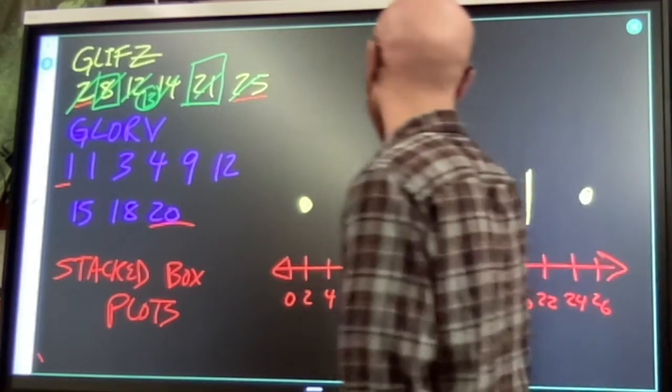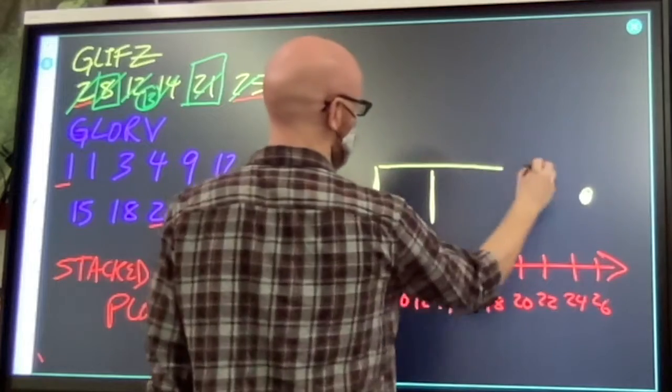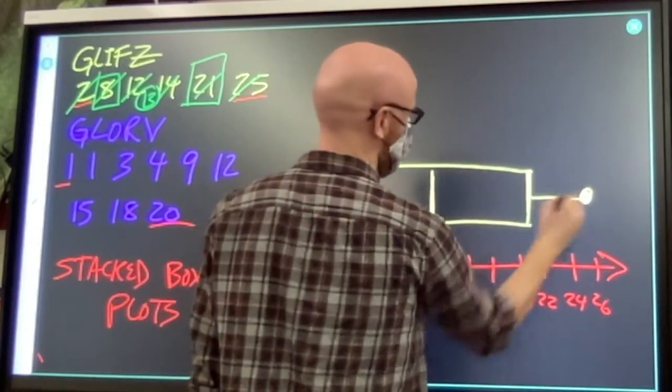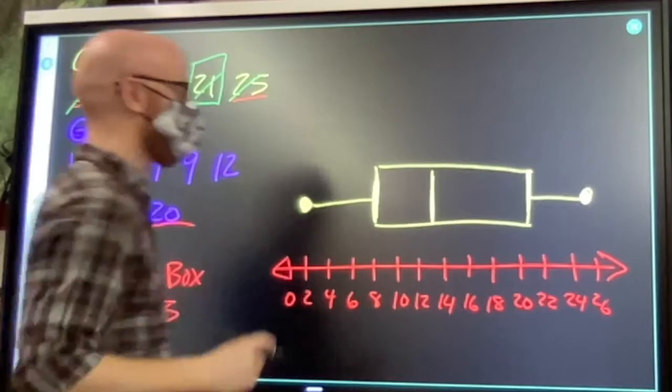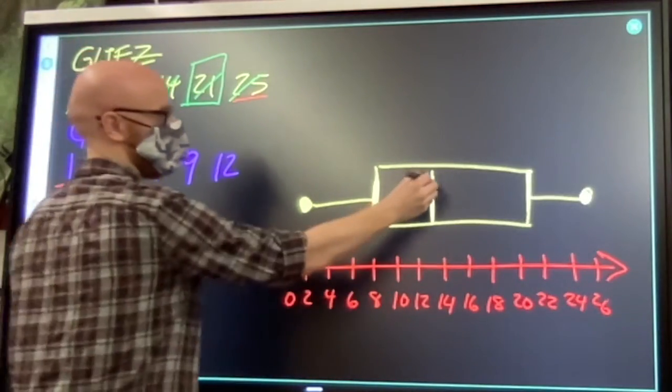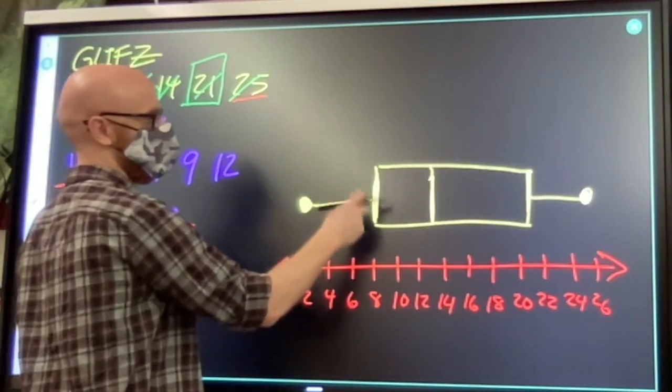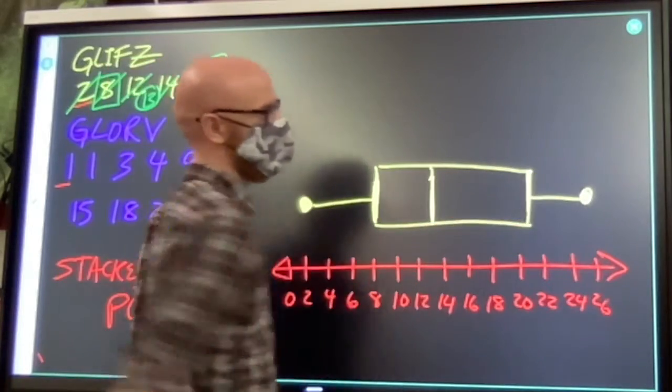For a fuller explanation on making box plots, you can see an earlier video, earlier topic, just single box plots. That's how a single box plot is made: minimum, first quartile, median, third quartile, maximum.